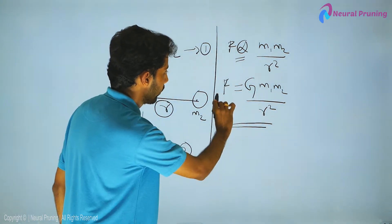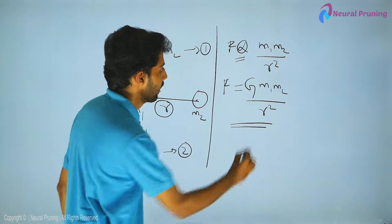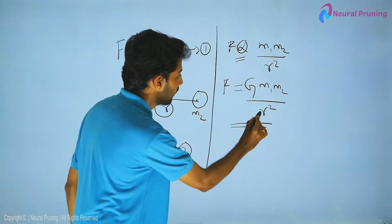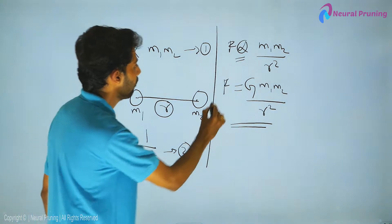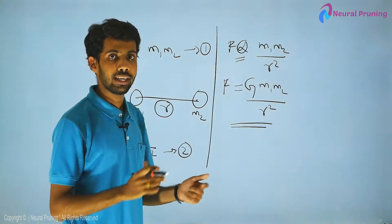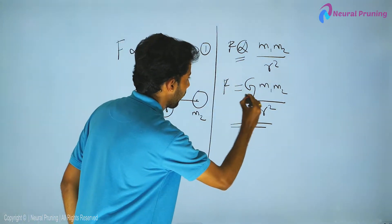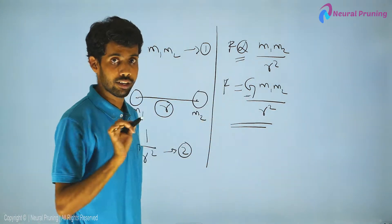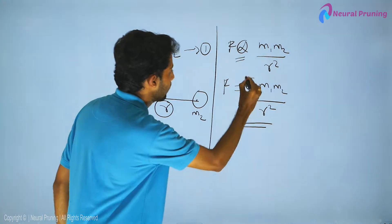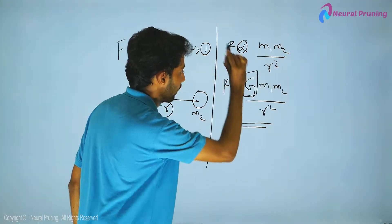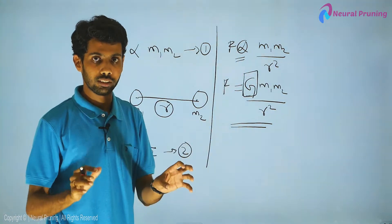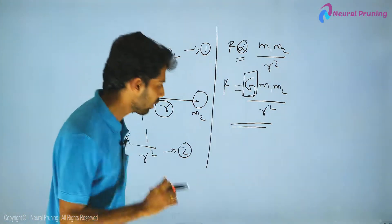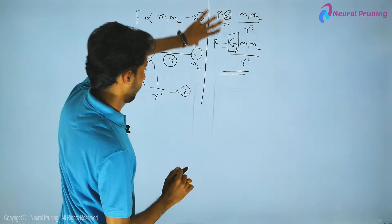In this equation, m₁ is the mass of the first body, m₂ is the mass of the second body, r is the distance between them, F is the gravitational force attracting both bodies, and G is the universal gravitational constant — meaning its value is the same for every body in the universe.